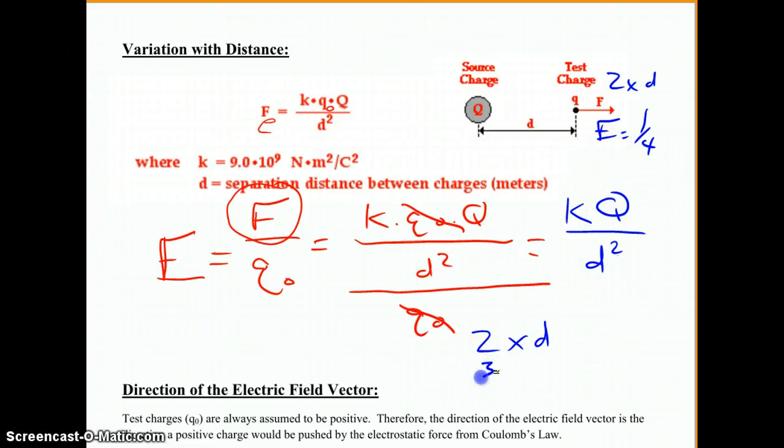If we tripled the distance, then we'll have one ninth of the field strength that we had before. So, the electric field strength drops off pretty quickly, you don't have to get away too far from an object to not notice its electric field anymore, same as it was for gravity.